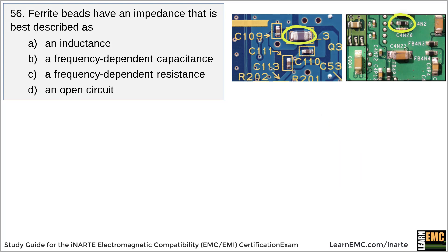Ferrite beads consist of a lossy ferrous material packed around a conducting wire. At DC, they have very little impedance. At higher frequencies, the time-varying magnetic fields induced in the ferrous material cause power dissipation that results in an overall resistance.